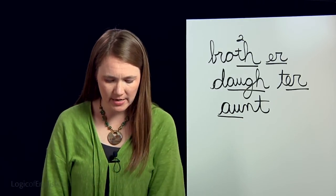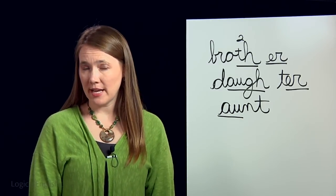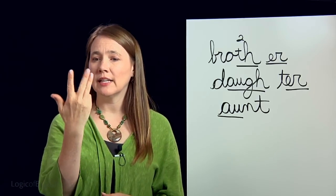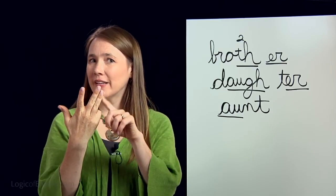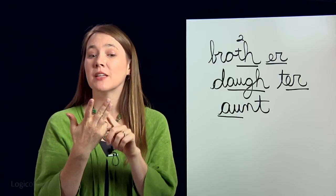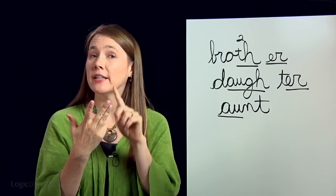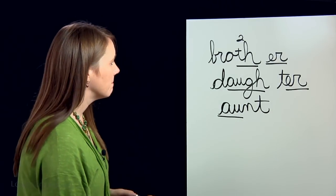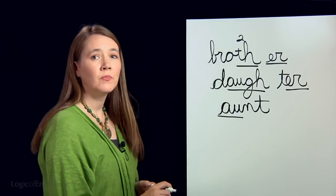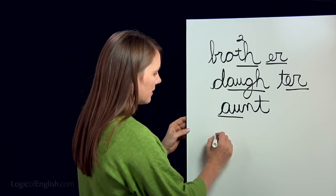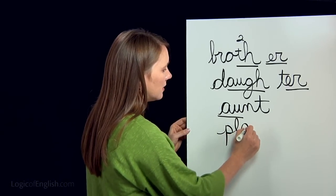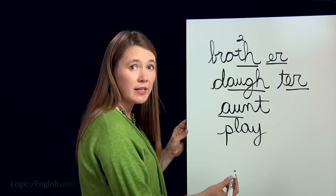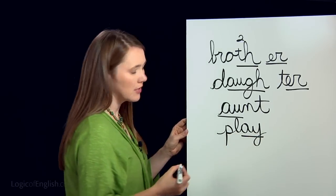The next word is 'play' — 'The children play outside.' P-L-A. Now what kind of A will you use? That's right, two-letter A that you may use at the end of English words. Write 'play.' P-L-A. Underline the two-letter A.